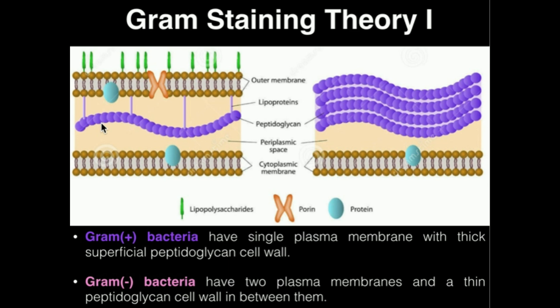Suppose you — your body — are the crystal violet dye. For one minute you jump into the quicksand pool, and an identical you jumps into the water pool. Which pool is it going to be easier to get out of? It's going to be easier for you, the crystal violet dye, to get out of a pool that's just water. However, if you jump into a pool that's nothing but quicksand or molasses, it's going to be harder for you to get out. Quicksand is probably the better analogy there.